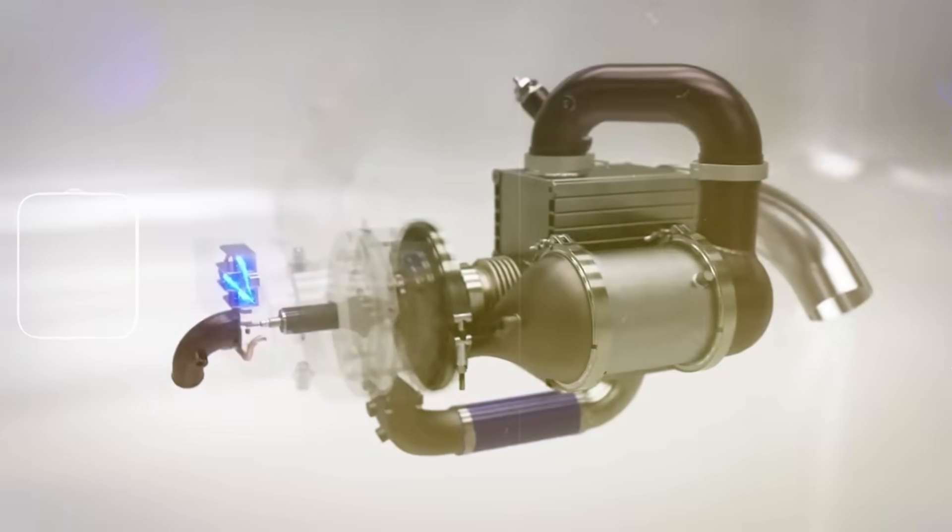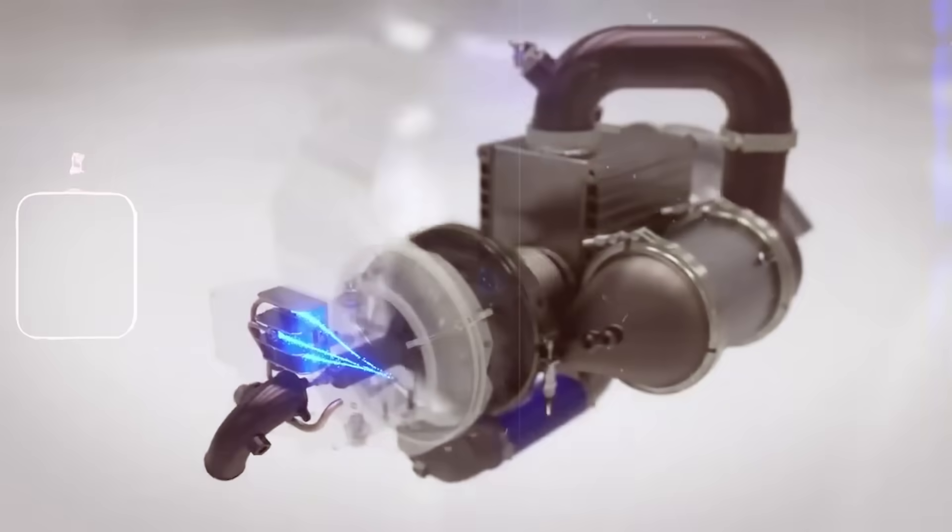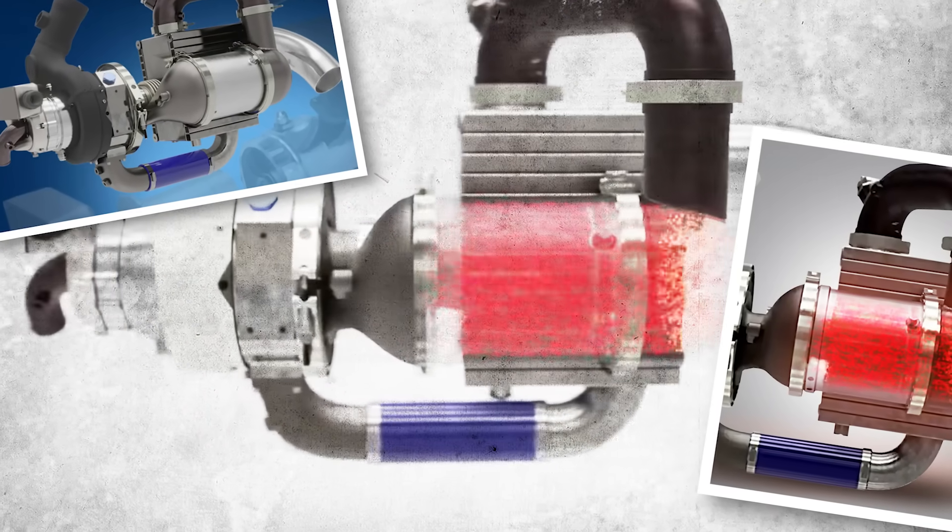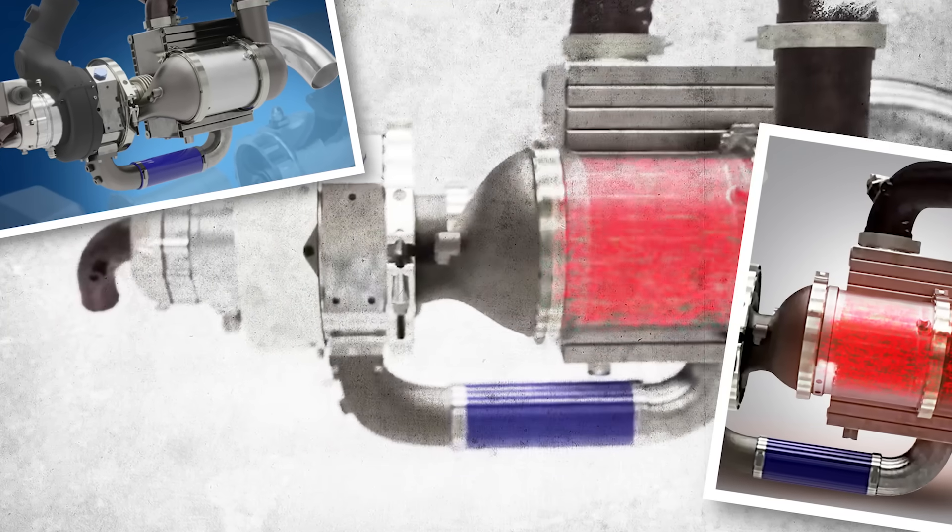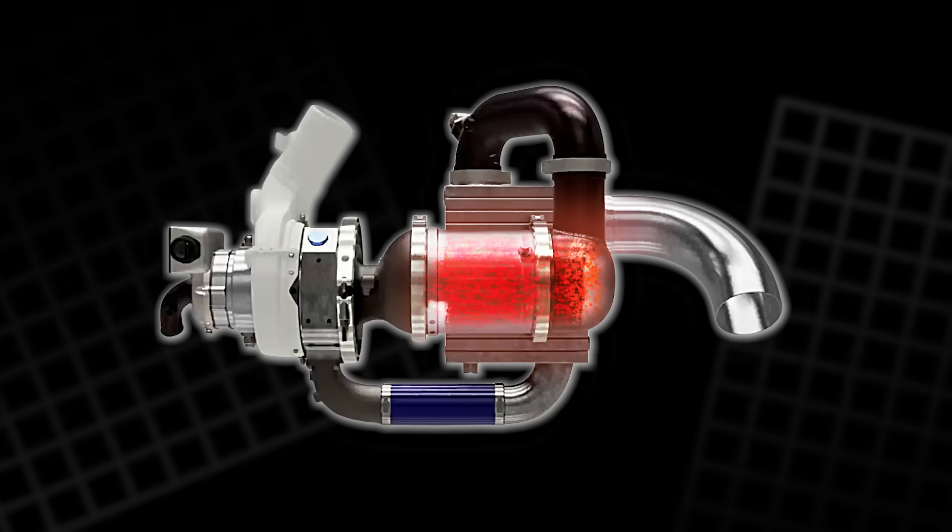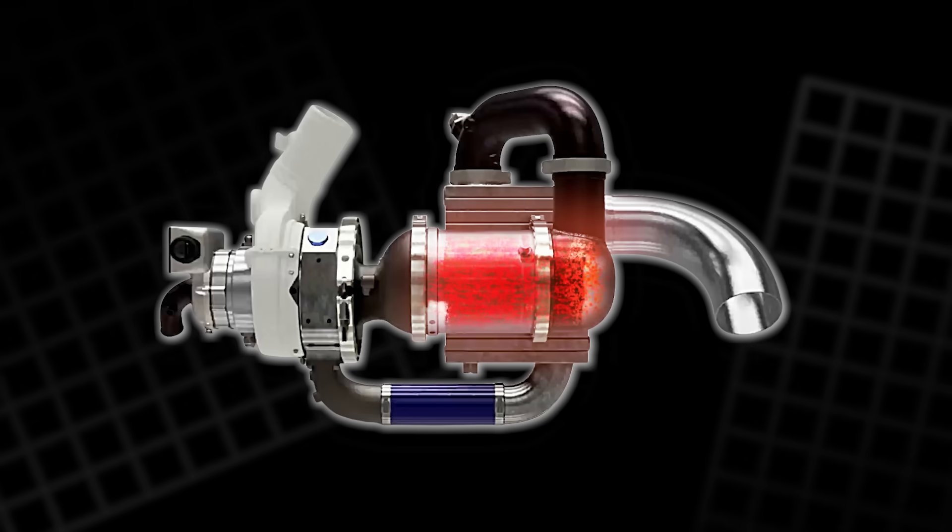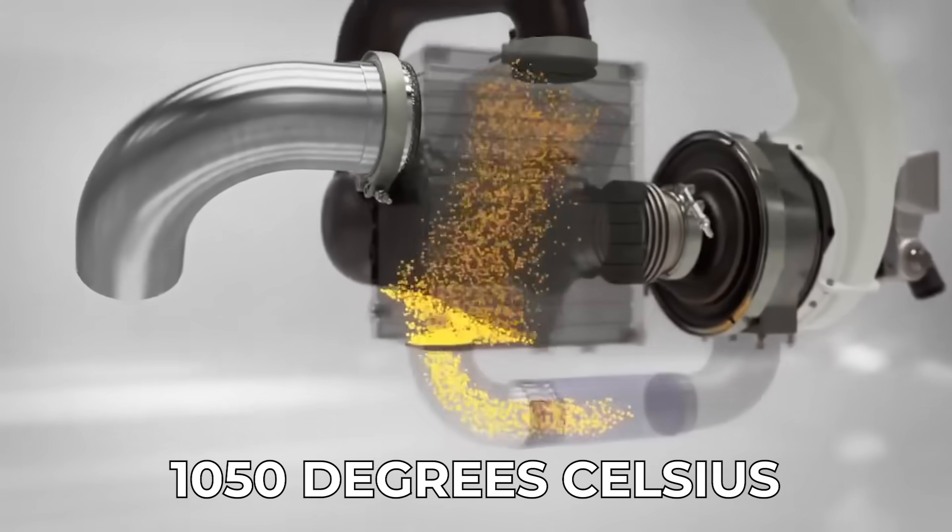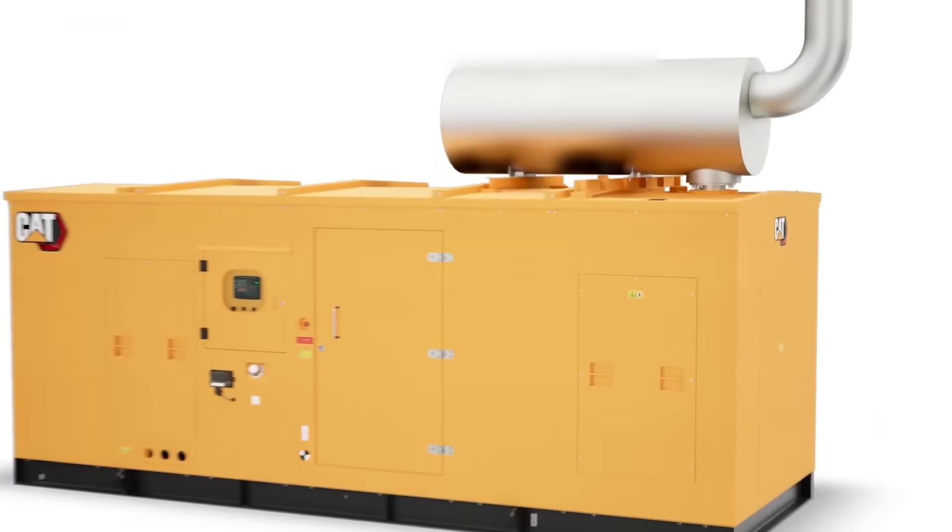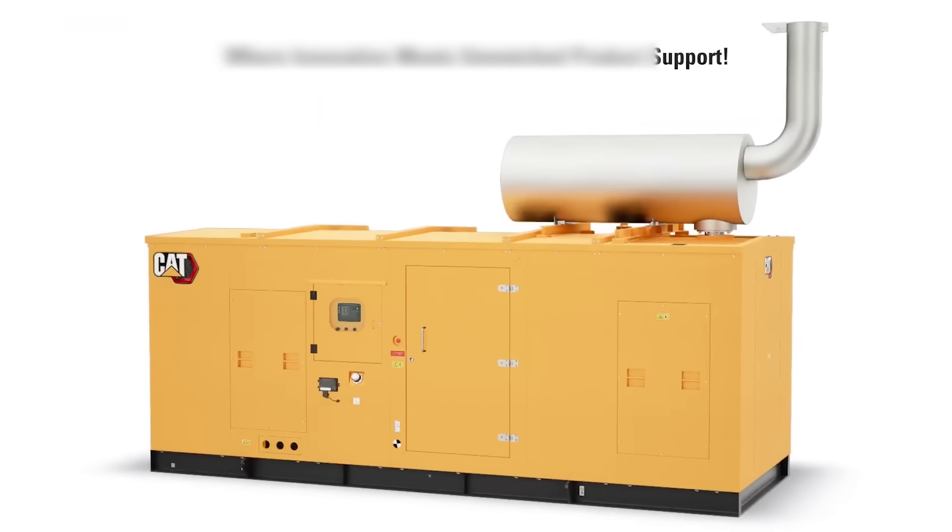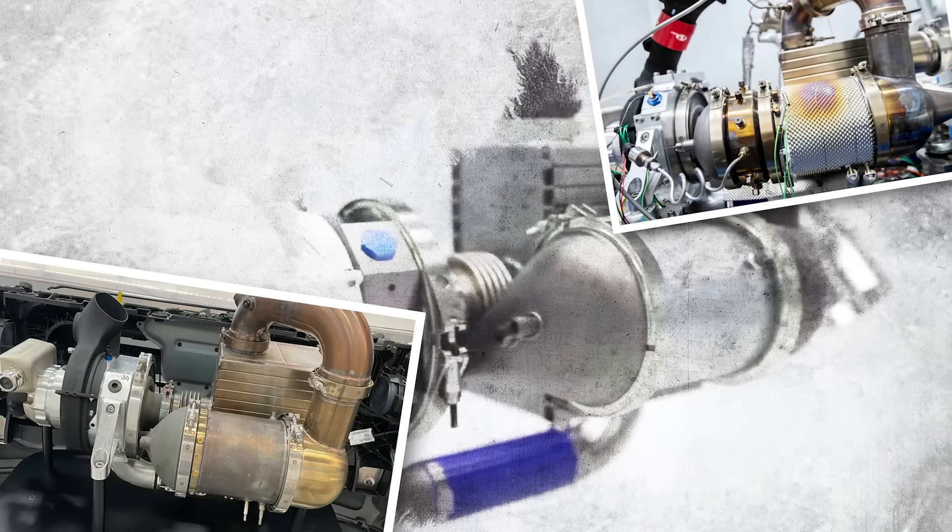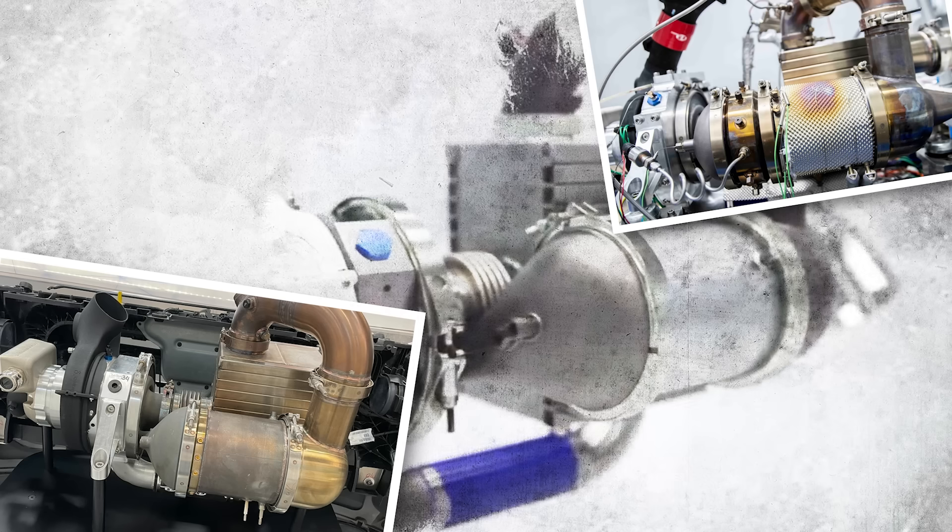After absorbing heat in the recuperator, the air travels toward the catalyst zone. Here, CAT-Gen demonstrates one of its key advantages. Instead of igniting a flame, the fuel is injected into the hot air and reacts on the catalyst surface. The catalyst speeds up the chemical reaction, so the fuel releases energy in a very controlled way. It is not a combustion flame, but a steady exothermic reaction. This reaction raises the temperature to around 1050 degrees Celsius. The lack of a visible flame means lower noise, fewer harmful emissions, and a more even temperature distribution inside the system. This consistency reduces the stress on internal parts and makes the process cleaner than traditional combustion engines.